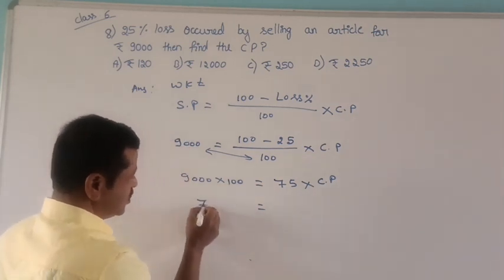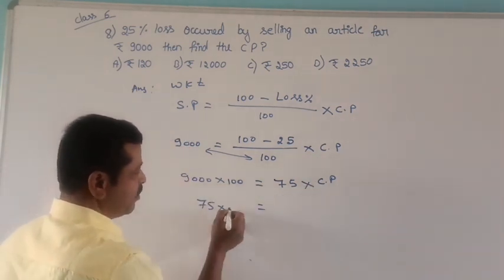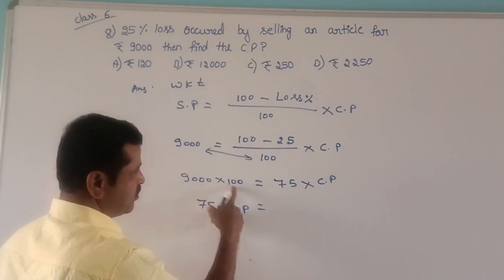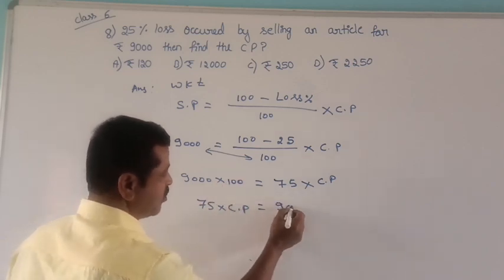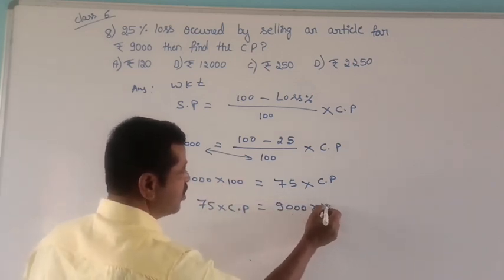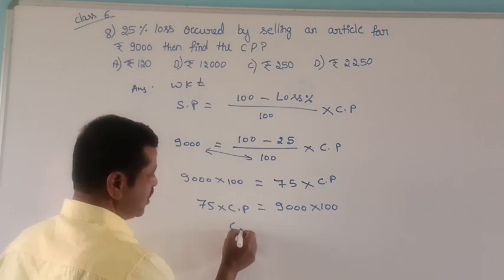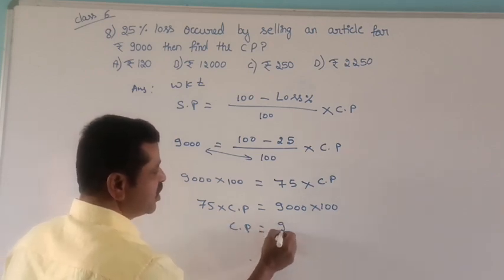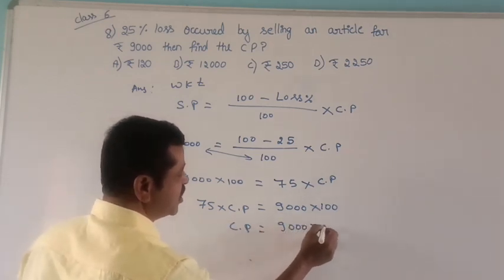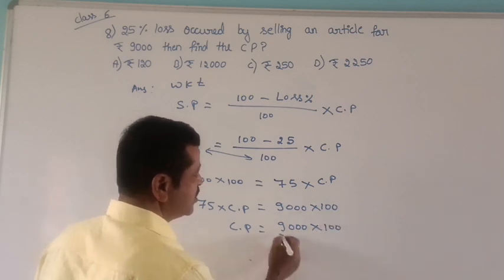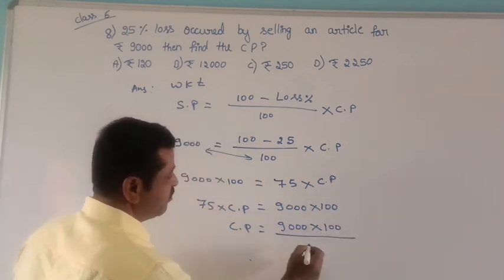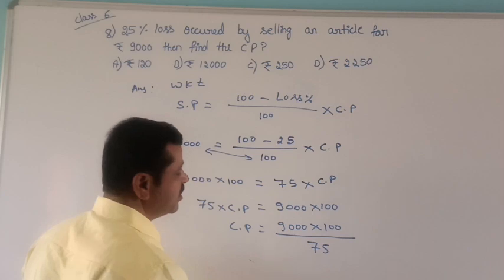Exchange: 75 into CP equals 9000 into 100. CP equals 9000 into 100 divided by 75.